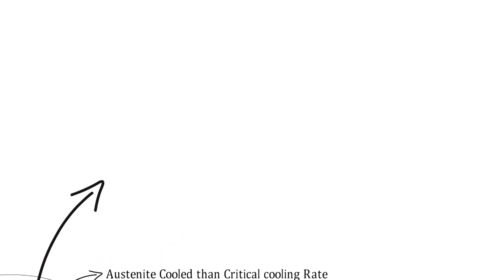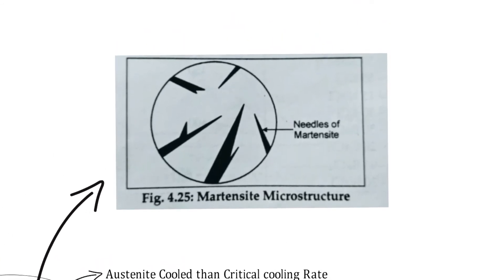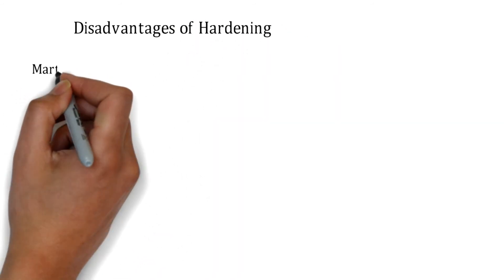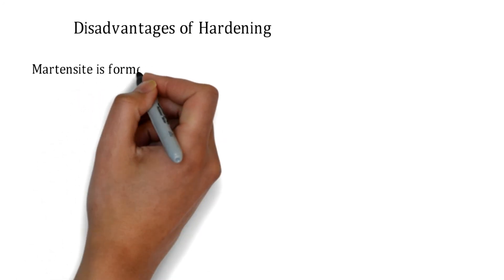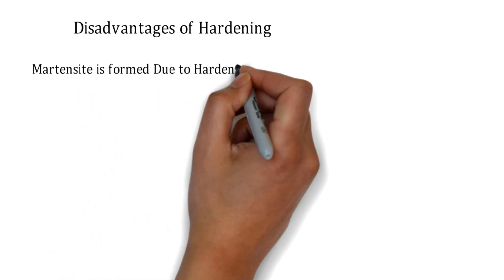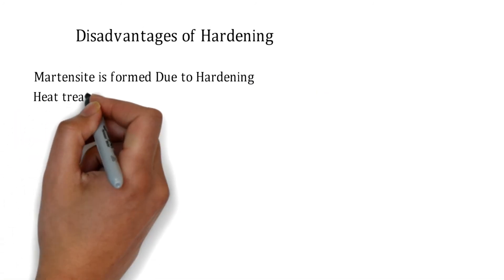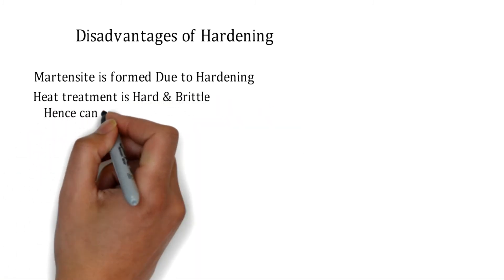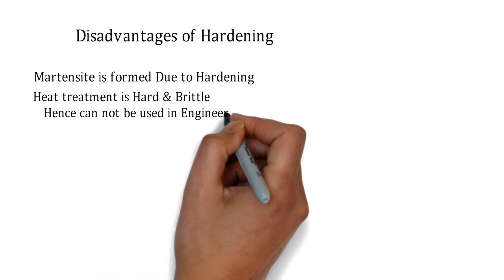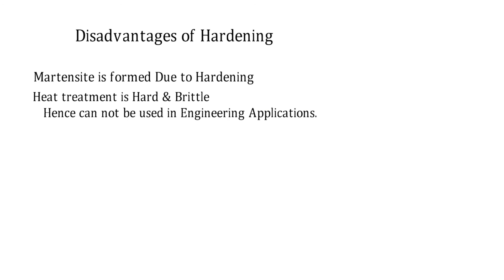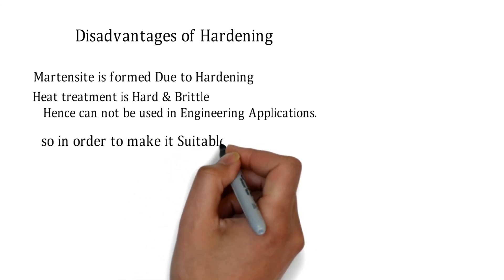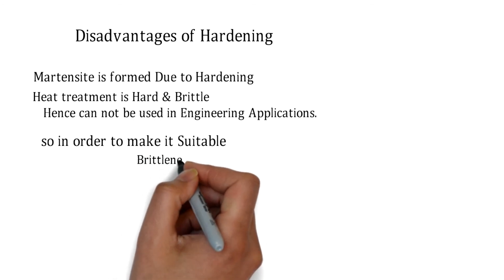The microstructure formed during hardening is the martensitic structure. However, a key disadvantage of hardening is that the martensite formed is hard and brittle, which means it cannot be directly used in engineering applications.